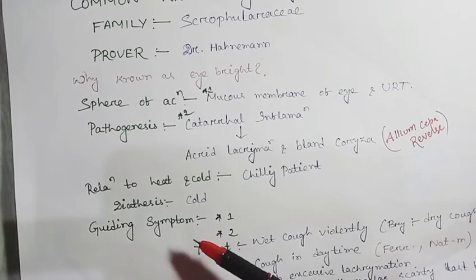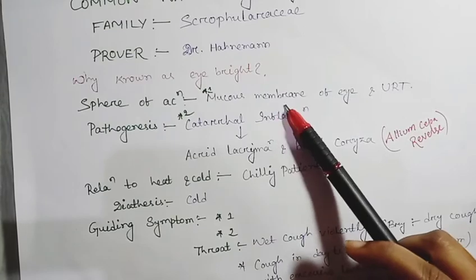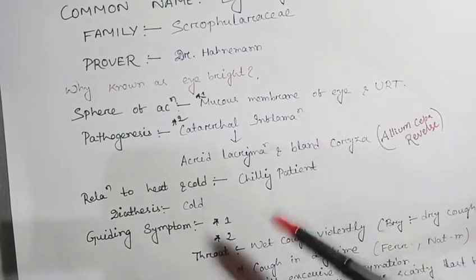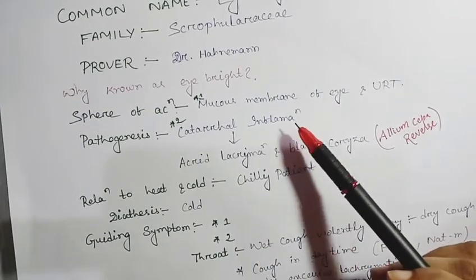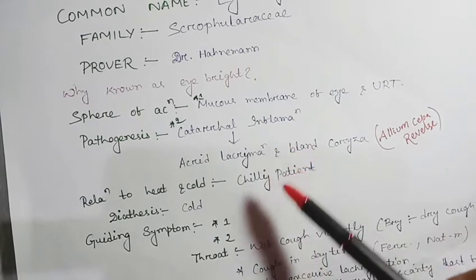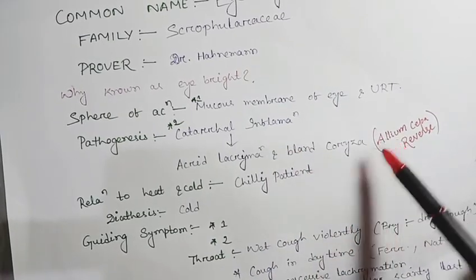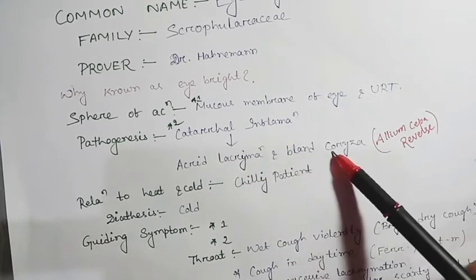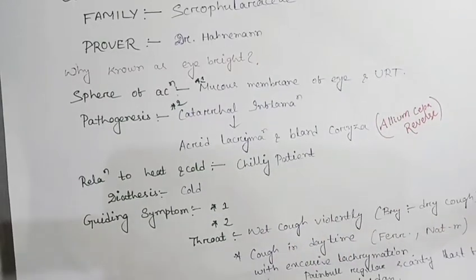The major guiding symptoms: First, infection of the mucous membrane of eye and urinary tract. Also headache - catarrhal type of headache, very profuse. Secondly, catarrhal inflammation of eye and nose - acrid lacrimation and bland coryza, completely opposite of Allium cepa.